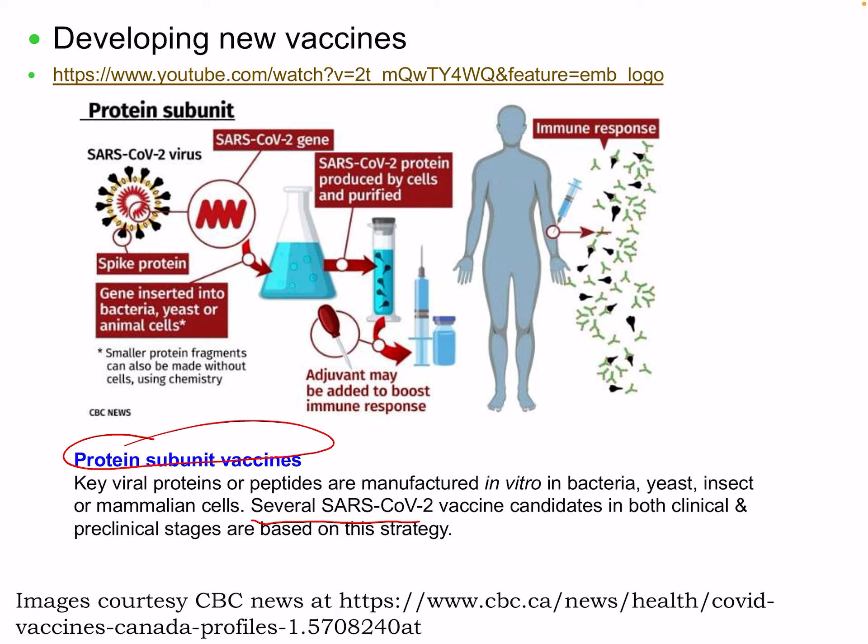Protein subunit vaccines use only key viral proteins or peptides manufactured in vitro in bacteria, yeast, insect, or mammalian cells. The largest number of SARS-CoV-2 vaccine candidates in both clinical and preclinical stages are based on this strategy using the spike protein. Virus-like particle or nanoparticle vaccines are structural viral proteins co-expressed to form non-infectious particles as the vaccine immunogen — they resemble real virions but lack the viral genome. Viral vector vaccines involve genes encoding pathogen antigens cloned into non-replicating or replicating virus vectors such as an adenovirus, with antigens produced by transduced host cells after immunization.